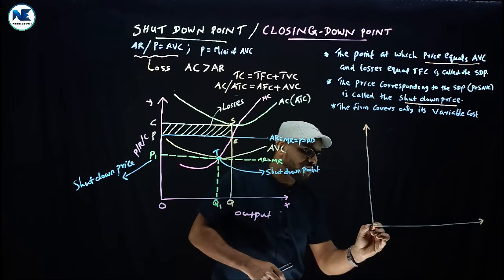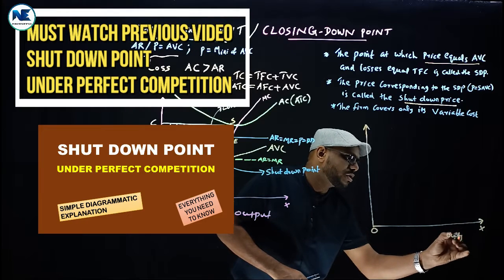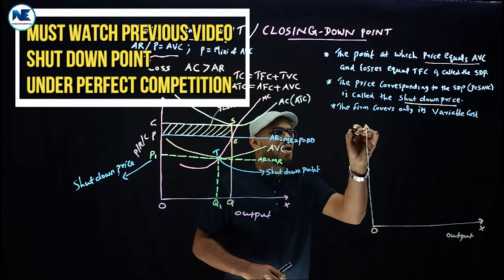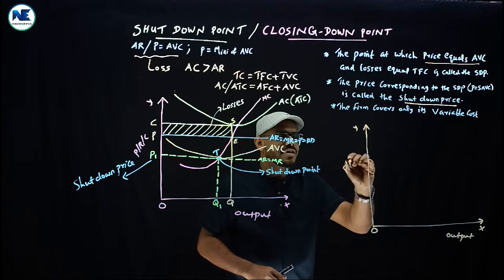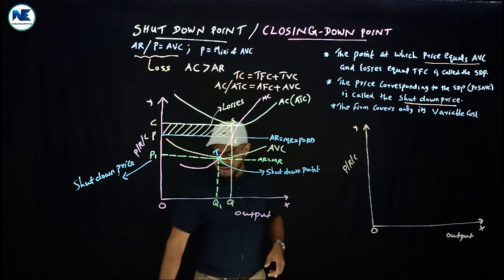On the x-axis, we have output. On the y-axis, we can take price, revenue, or cost.